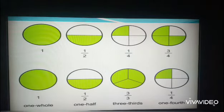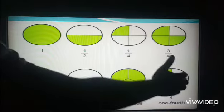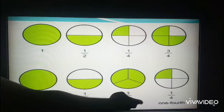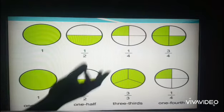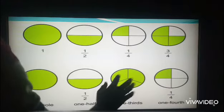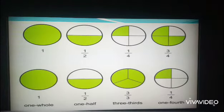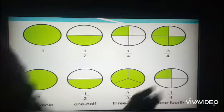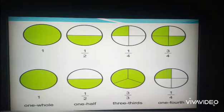I hope you understand. The same applies to this one. This is called one whole, like I told you. One half, three thirds—that means it has been divided into three and we have taken all three. And then this one is one fourth or quarter. Another name for quarter is one fourth.